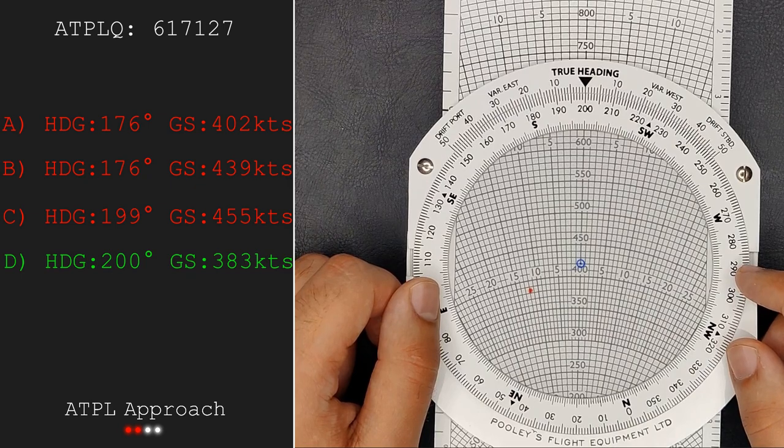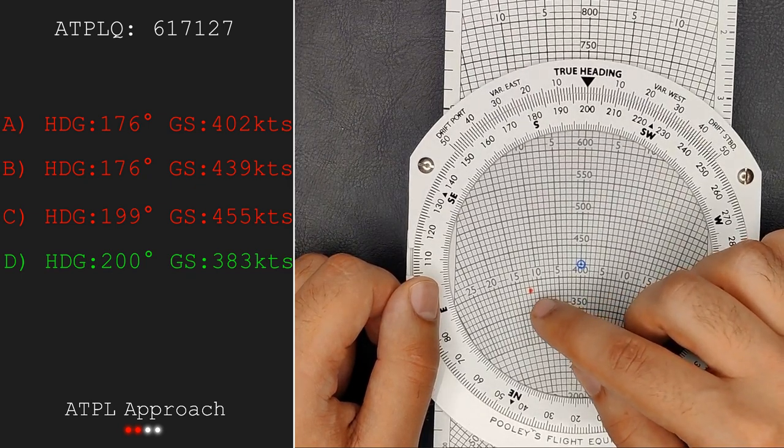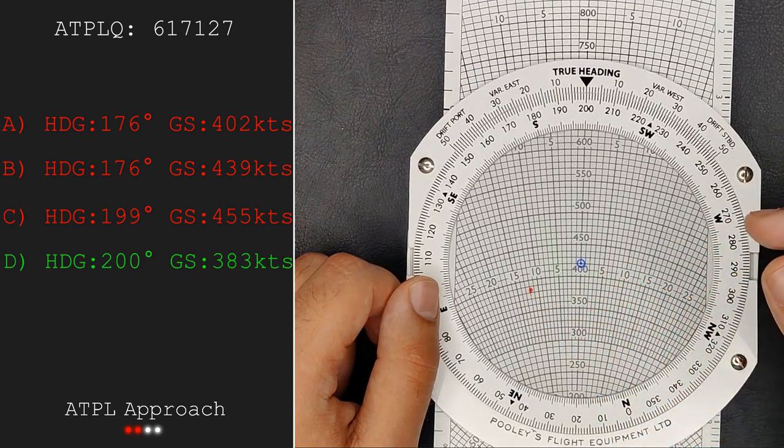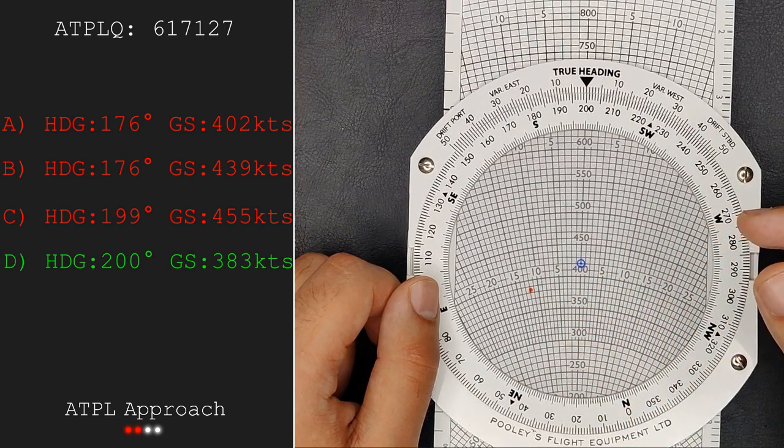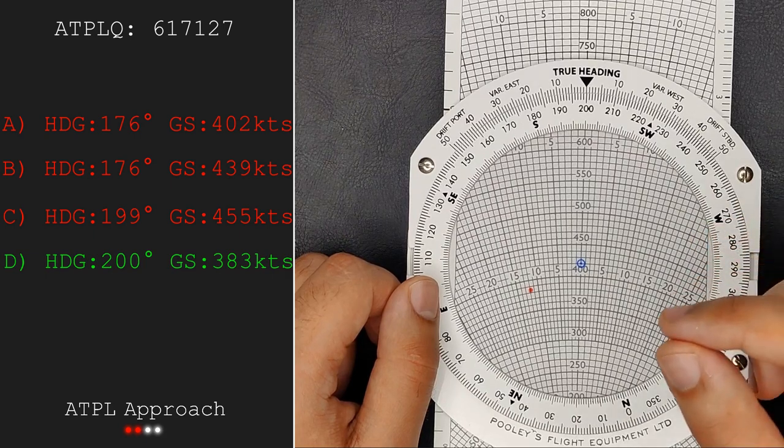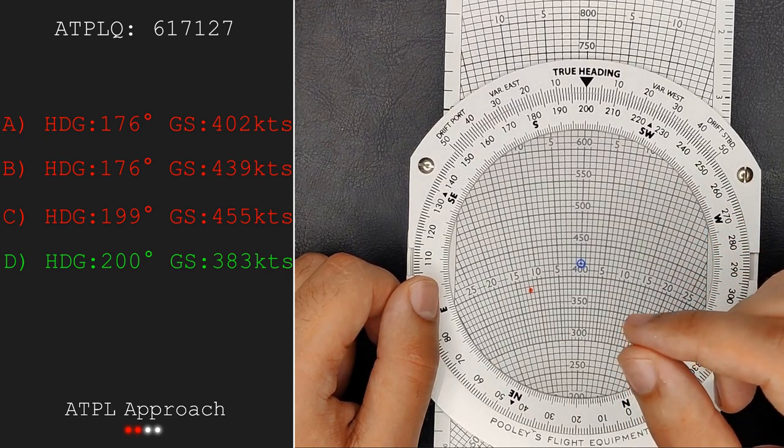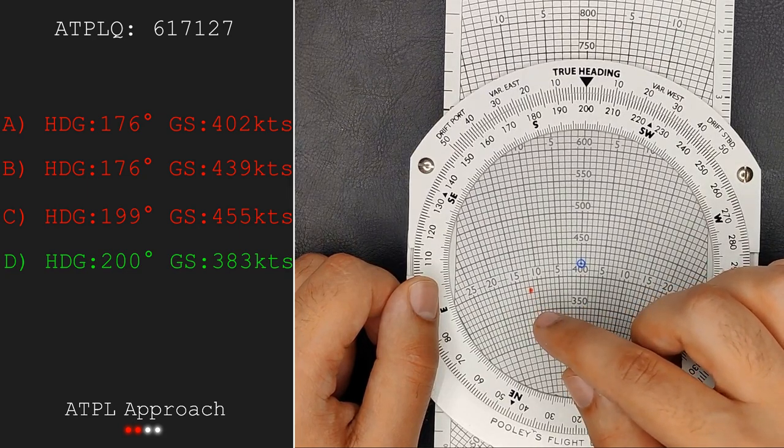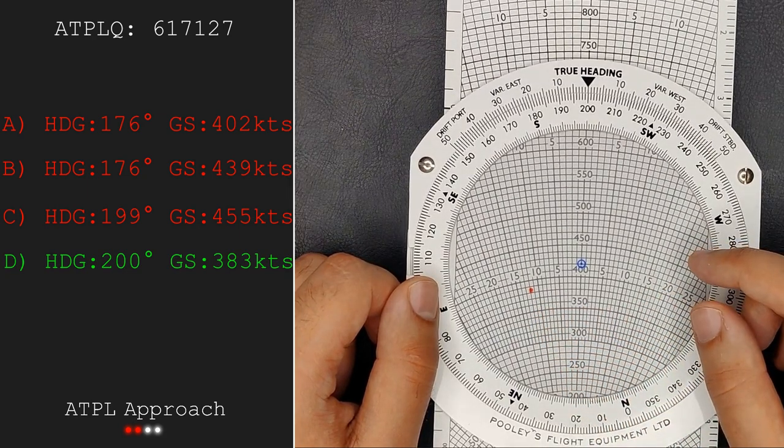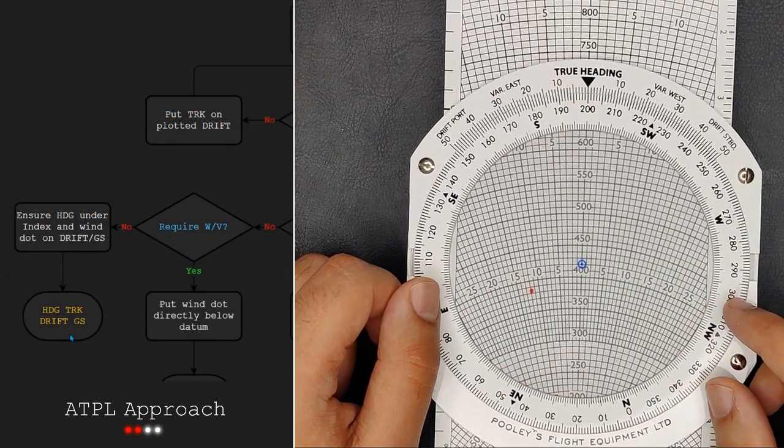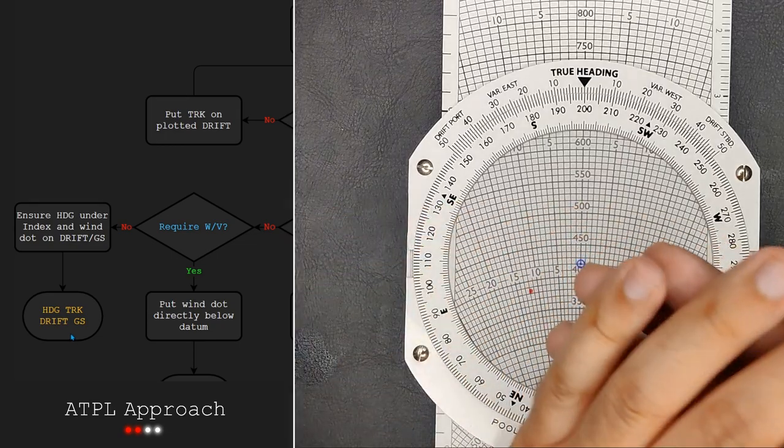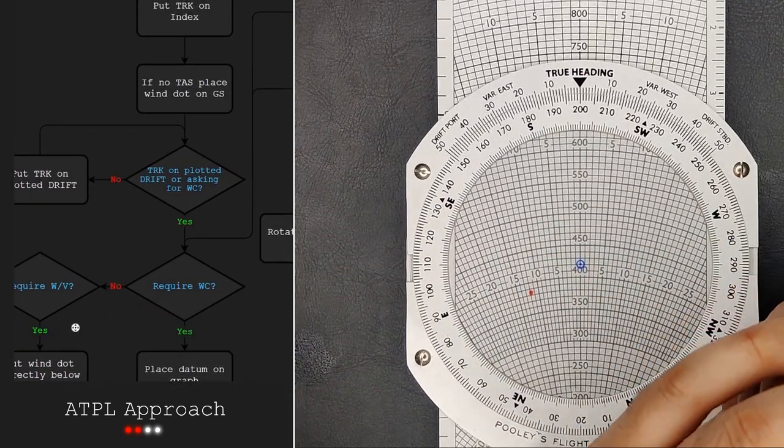I mean if you take a look at the wind dot here it's fat enough where it's covering almost 10 knots so it's really hard to say where we place the center of it is important so we don't just look at the top or the bottom of the wind dot we need to be looking at the center and where that lines up with.